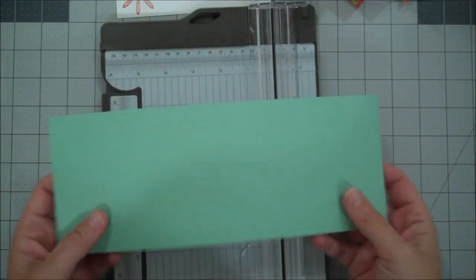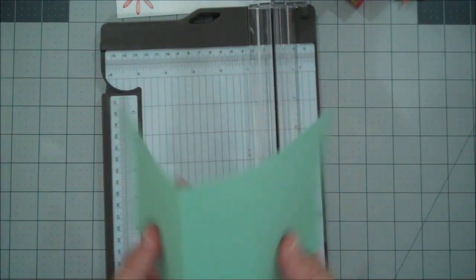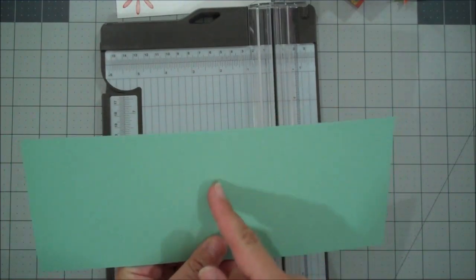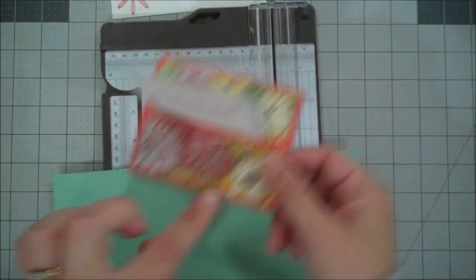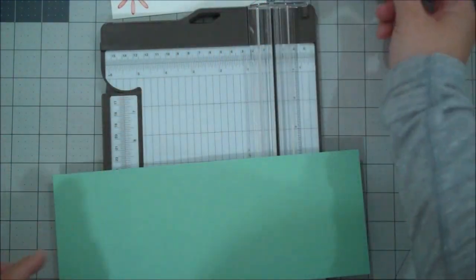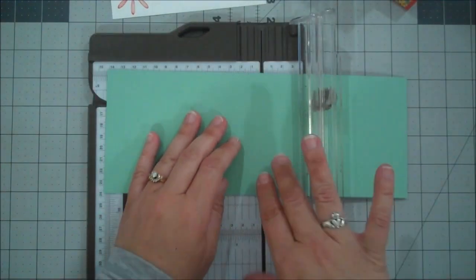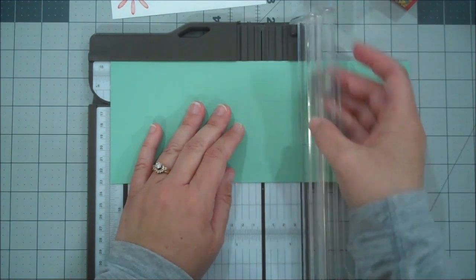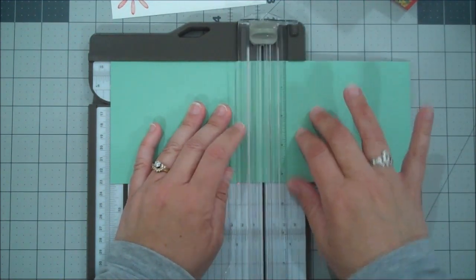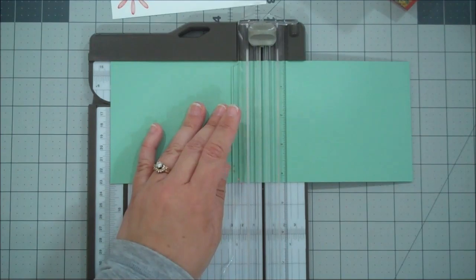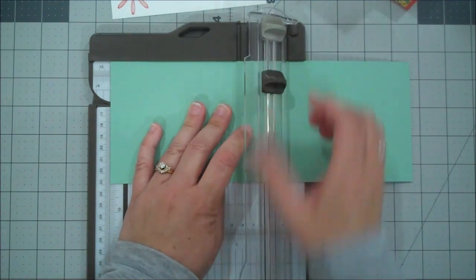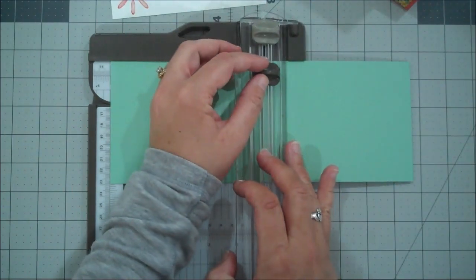So I know it might be hard to see, hopefully you can see this is kind of our middle score line. That is the one that we are going to cut to fit our card in. So I am going to position that right inside my blade here. I'm going to, let me actually grab my blade.